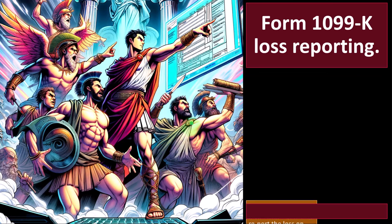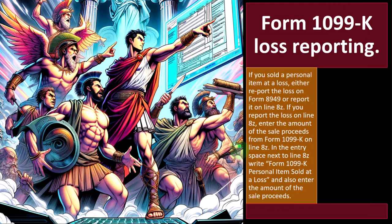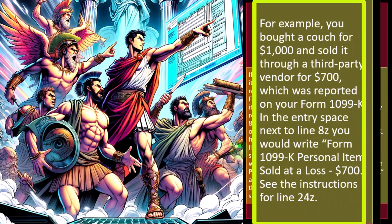Form 1099-K loss reporting: if you sold a personal item at a loss, either report the loss on Form 8949 or report it on Line 8Z. If you report on Line 8Z, enter the sale proceeds from Form 1099-K and in the entry space next to Line 8Z write 'Form 1099-K personal items sold at a loss' along with the amount. For example, if you bought a couch for $1,000 and sold it for $700 reported on Form 1099-K, you would write 'Form 1099-K personal items sold at a loss — $700.'